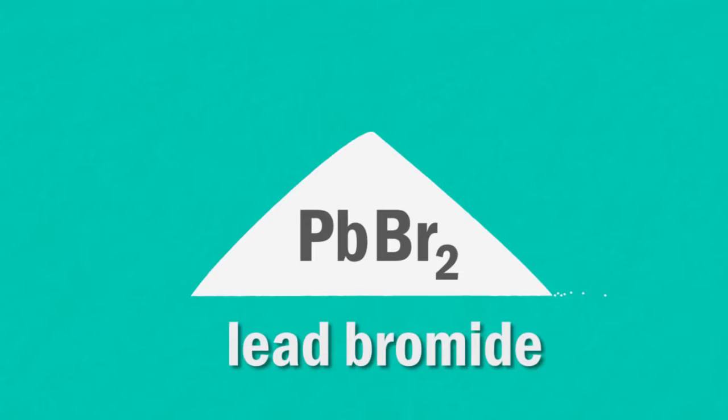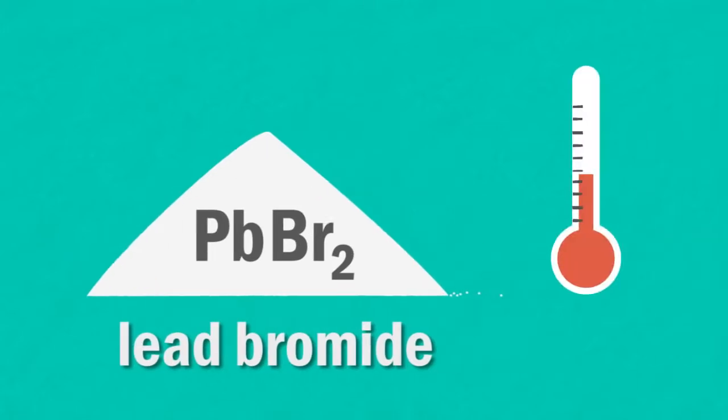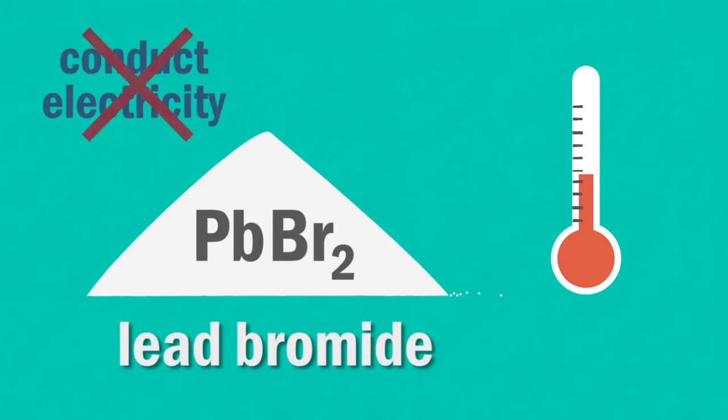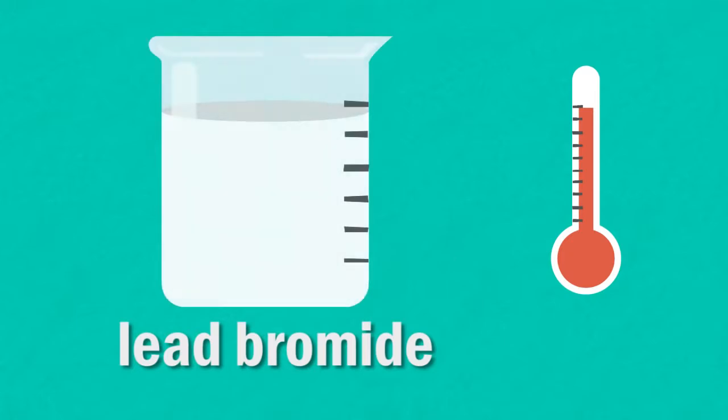Another example of electrolysis is with lead bromide, which can actually be done in a laboratory. At room temperature, it's a solid and as we've seen with other ionic solids, it won't conduct as the ions cannot freely move. But when it is heated and melts, it becomes an electrolyte.